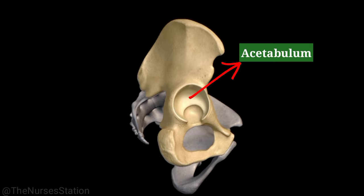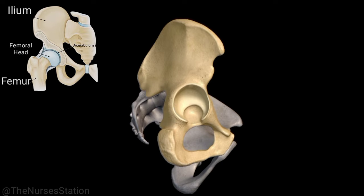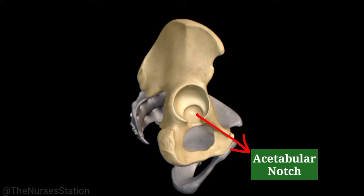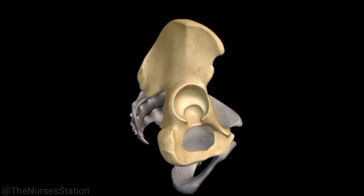The acetabulum is a deep fossa formed by the ileum, the ischium, and the pubis. It functions as the socket that accepts the rounded head of the femur; together the acetabulum and the femoral head form the hip or coxal joint. On the inferior side of the acetabulum is a deep indentation called the acetabular notch, which forms a foramen through which blood vessels and nerves pass and serves as a point of attachment for the ligaments of the femur.